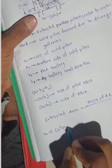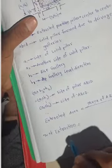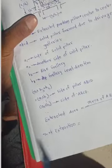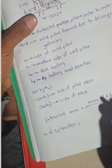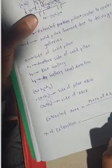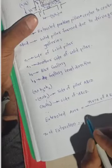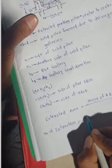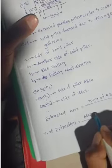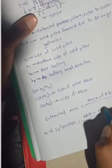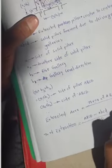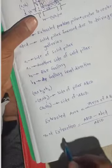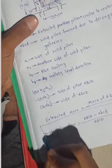The percentage of extraction equals the total extracted area divided by the individual total area, multiplied by 100. So: area of capital ABCD minus area of small ABCD, divided by area of capital ABCD, into 100. This is the common formula used.